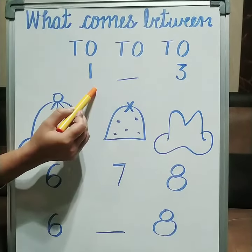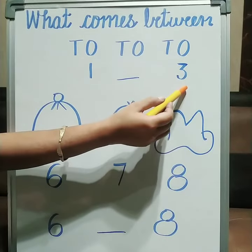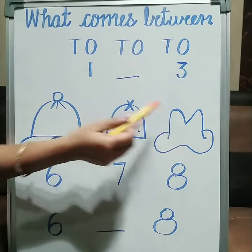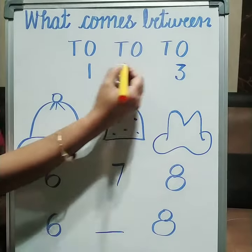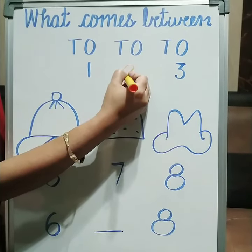This is one. This is three. Now what comes between these two numbers? Answer is two. The right answer is two.